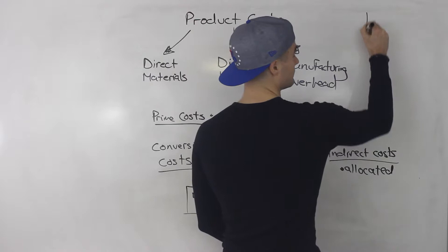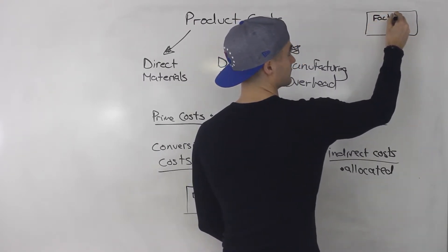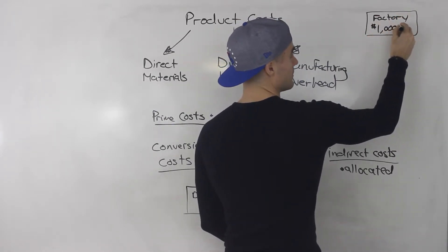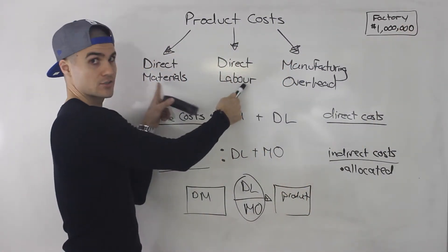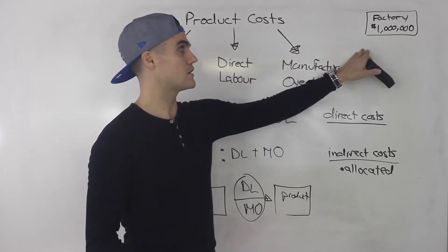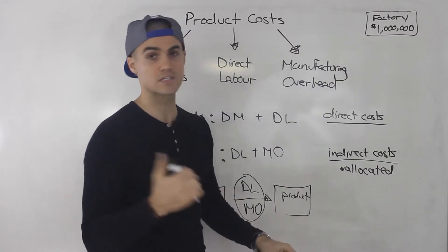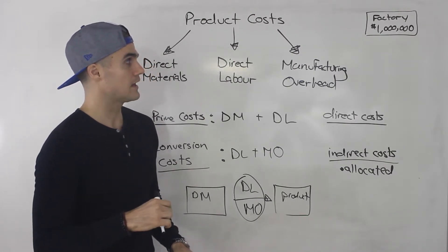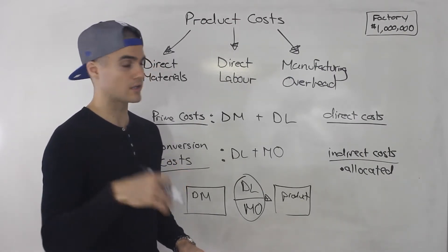This is a concept we go into in more detail in future chapters, but let's say you have a factory. The total cost to run the factory is a million dollars — and that's excluding the direct materials and direct labor, so that's just all manufacturing overhead. So like the rent, paying the custodian, paying the factory supervisor, the utilities, et cetera. It all costs a million dollars.